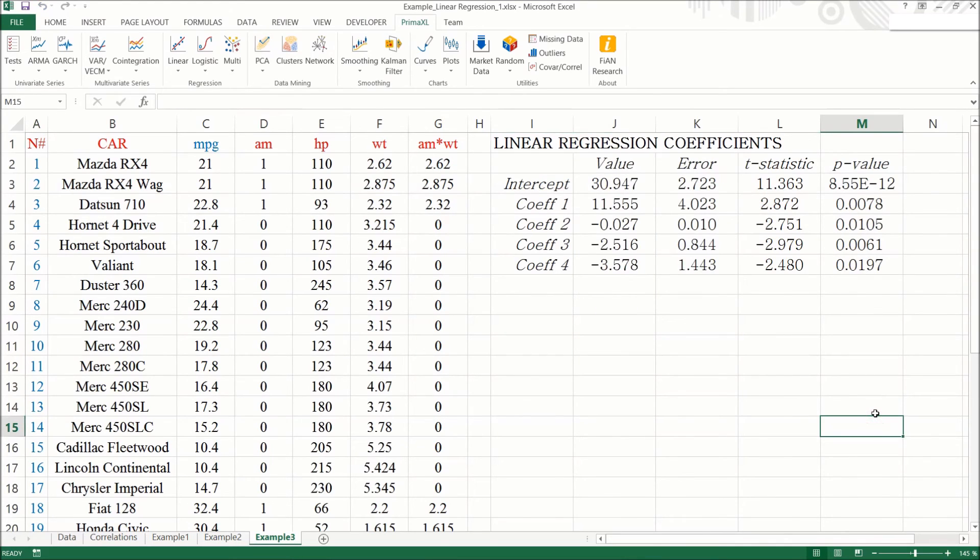Great, here all the coefficients or betas are statistically meaningful as the p-values are quite small. In particular, we can notice that the beta1 is about 11.55. According to this model, the MPGs become distinguishable again. And the MPG for the manual transmission is higher by 11.55.